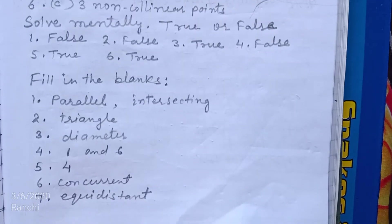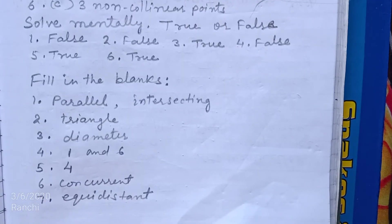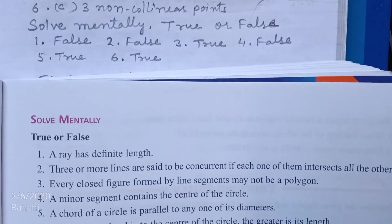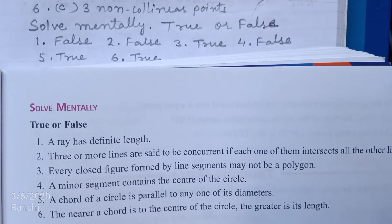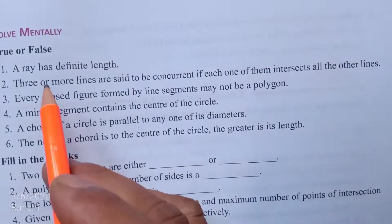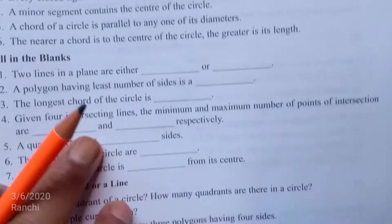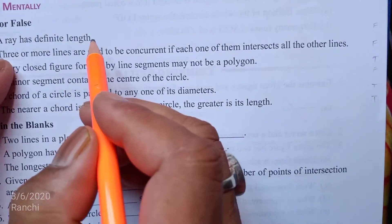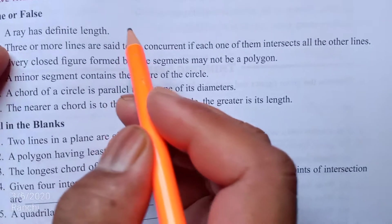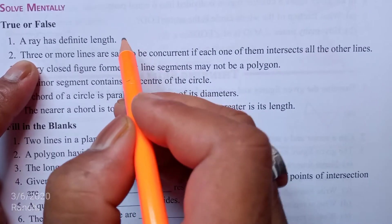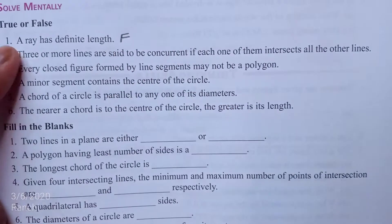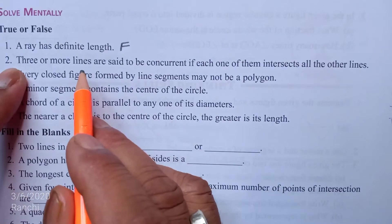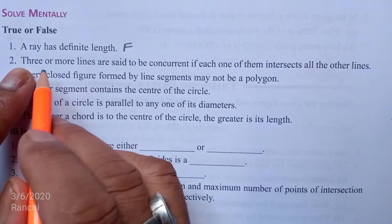Ab solve mentally — true or false batana hai aapko students. Question A: A ray has definite length. Ray ka definite length hota hai students? False hai. Ray does not have a definite length. It can be extended in one direction endlessly, infinitely.